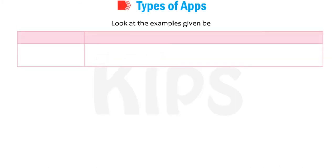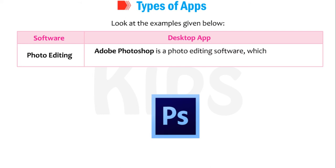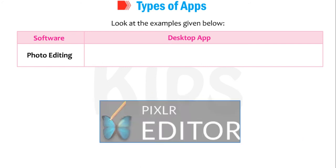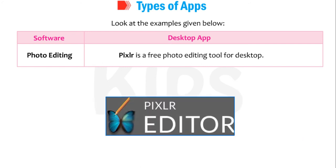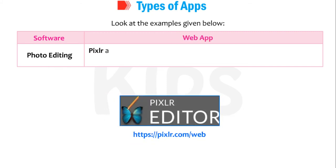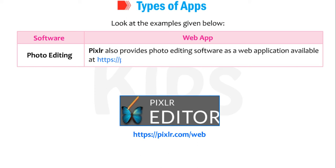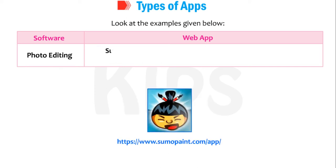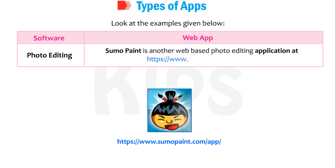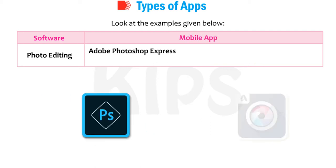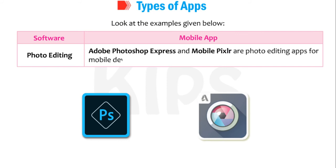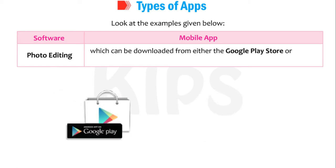Look at the examples given below. For photo editing software: the desktop app Adobe Photoshop must be installed on a desktop or laptop, while PixelR is a free photo editing tool for desktop. As a web app, PixelR also provides photo editing software available at https://pixelr.com/web, and SumoPaint is another web-based photo editing application at https://www.sumopaint.com/paint/. For mobile, Adobe Photoshop Express and mobile PixelR are photo editing apps that can be downloaded from either the Google Play Store or App Store.